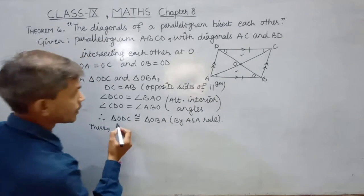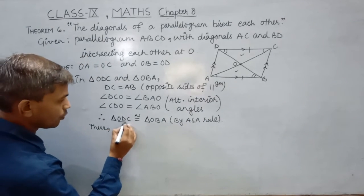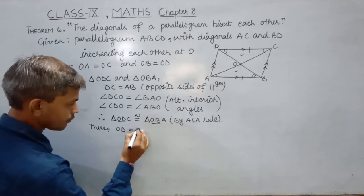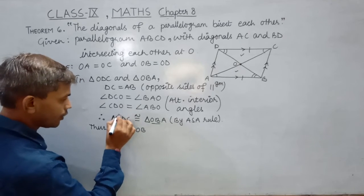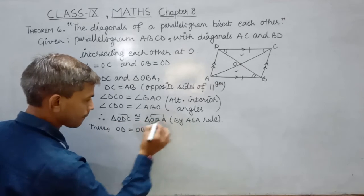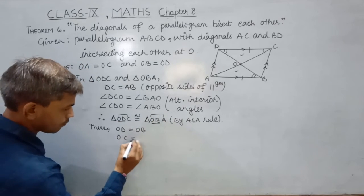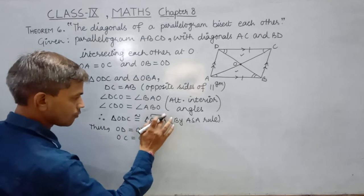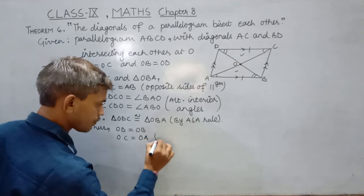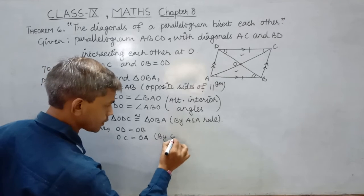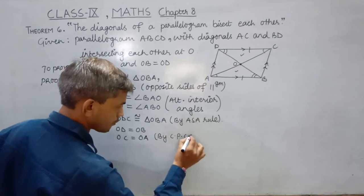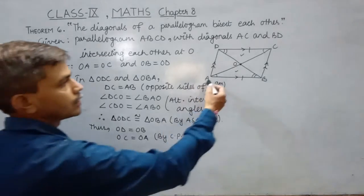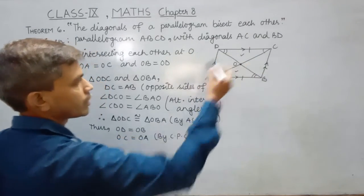Because by CPCT, OD equals OB and OC equals OA, and it's proved that diagonals AC and BD bisect each other at O.